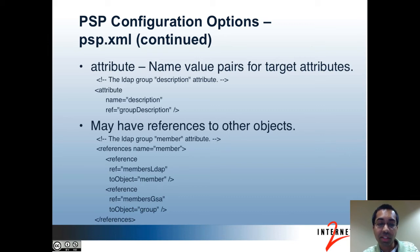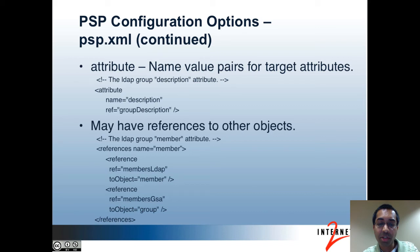The PSO definition may also have references to other objects — this is how the Member and MemberOf attributes are handled. For the Member attribute, it has two references to the attribute resolver: there's the members LDAP one, which returns members that are in your LDAP source by default, and the members GSA one, which returns members that are groups by default. So the Member attribute would have members that are both people and potentially other groups. By default, memberships in LDAP are flat, so you may not necessarily want the latter. You can simply remove that reference element in the XML if that's the case. You can add, remove, or modify attributes and references from the default config to meet the specific needs at your institution.